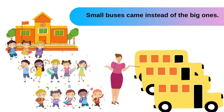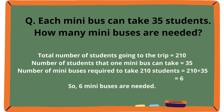Small buses came instead of the big ones. Each minibus can take 35 students. How many minibuses are needed? Total number of students going on the trip is 210. Number of students that one minibus can take is 35. Number of minibuses required will be 210 divided by 35, which equals 6. Therefore, 6 minibuses are needed.